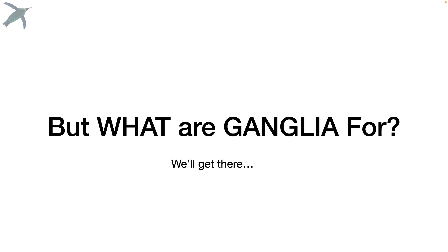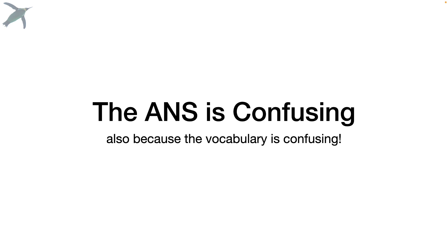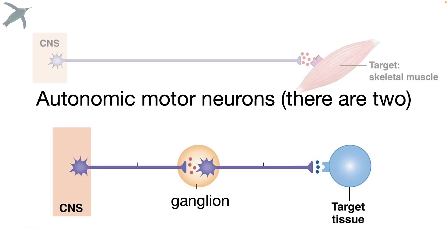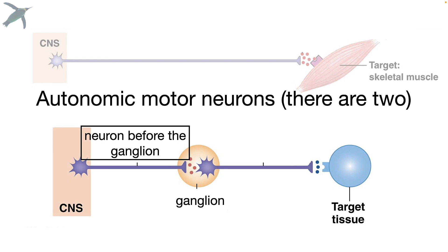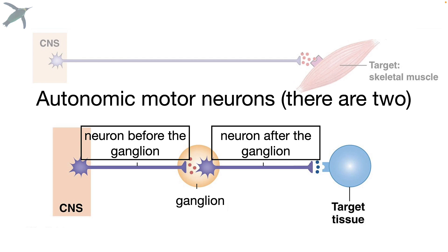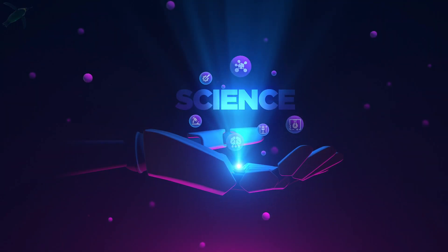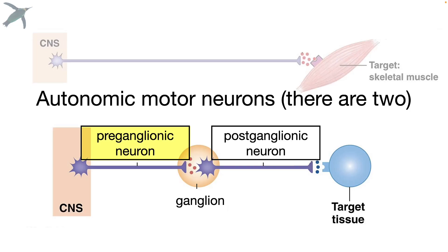The ANS is also confusing because the vocabulary itself is confusing. We've got to be able to identify these neurons. We have the neuron before the ganglion and the neuron after the ganglion — but we need to be more precise scientifically. So we call these the preganglionic neuron and the postganglionic neuron.